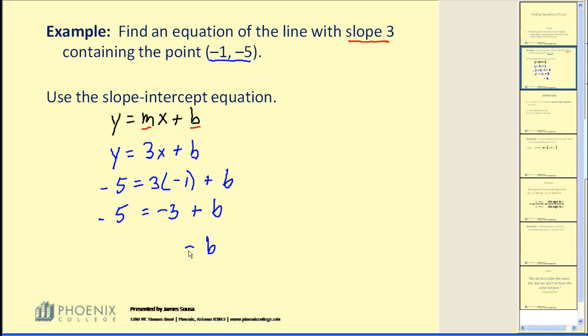We'll simplify this and solve for b. Adding 3 to both sides, b equals -2. So we have all the information we need. The equation of this line is y = 3x - 2. Putting minus 2 is more standard.